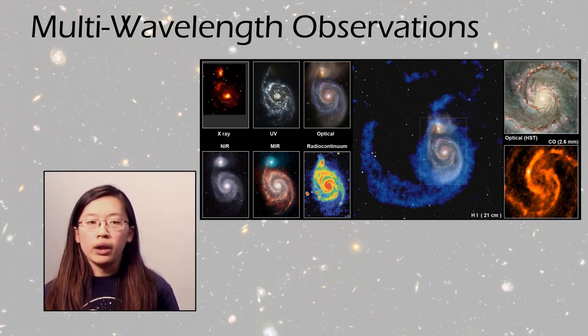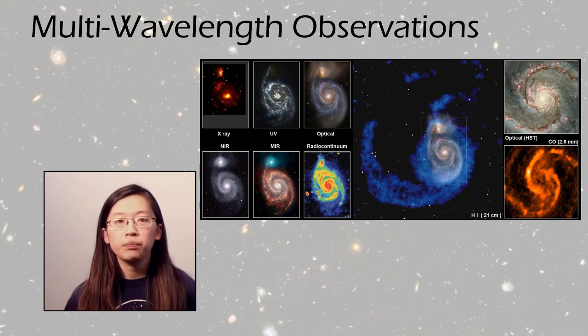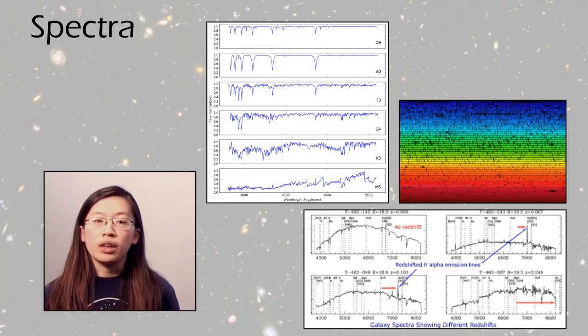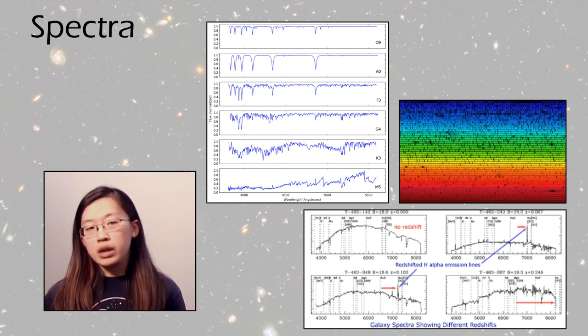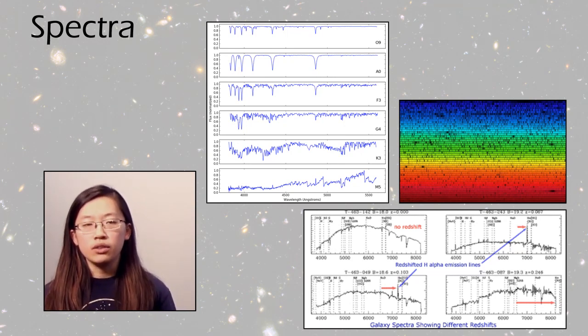So this is why it's important to take a look at many of these DSOs in multiple wavelengths. We also have spectra, which tell us a lot about the chemical composition of our DSOs, as well as something about how they emit energy, whether they're absorbing or emitting in these elements.